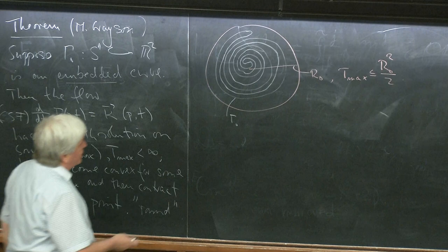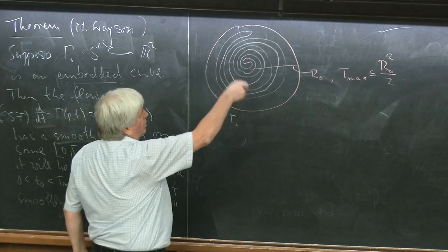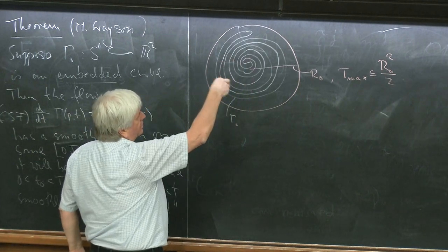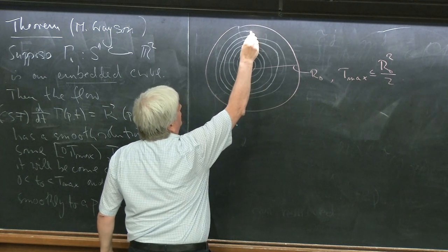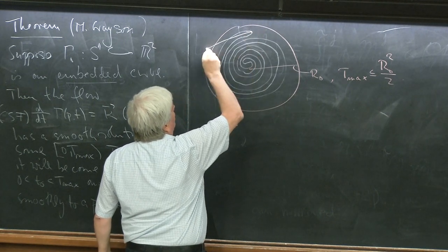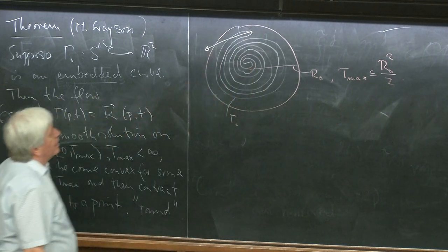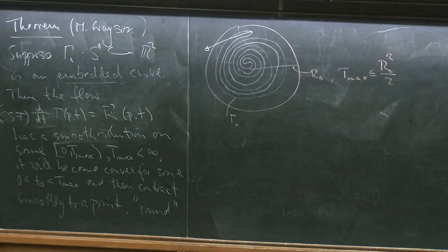The reason this works is that the more thin you make these spirals, the bigger the curvature gets at the tip, and the larger the speed is. So the more you try to construct your counter-example, the faster the thing unwinds.